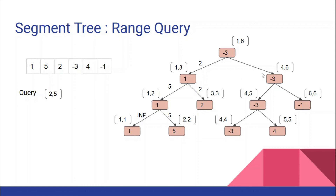Now we go right to node 4-6: it overlaps with our query range 2 to 5 but is not completely inside, so we make recursive calls to left (4-5) and right (6-6). Since 4 to 5 is completely inside our query range 2 to 5, we return the result saved there, which is -3. Since 6 to 6 is completely outside the query range, we return infinity. Minimum of -3 and infinity is -3, so we return -3. Finally, minimum of 2 and -3 is -3. So the minimum element in the range 2 to 5 is -3.